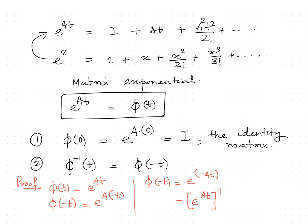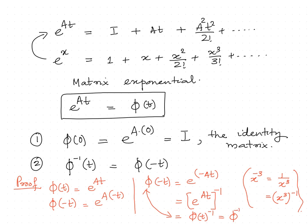Something like x^(-3) is 1/x^3, that is (x^3)^(-1). Hence I can write this as phi(t)^(-1). So phi(-t) = phi(t)^(-1), which is phi_inverse(t).